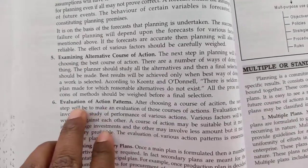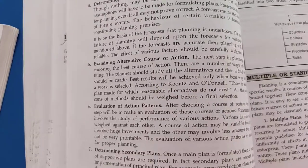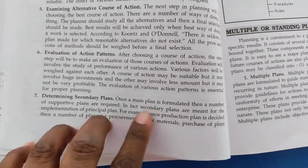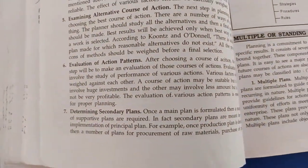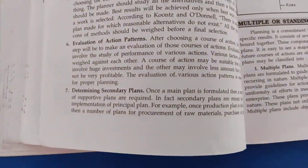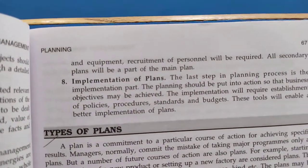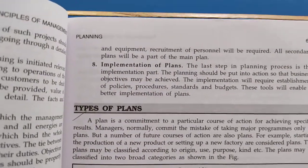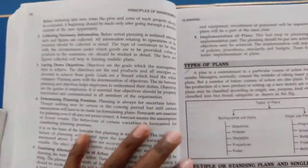In the plan itself, we will make a pattern, and as per that pattern only we have to perform it. Next is determining secondary plans — once a plan is formulated, a number of supportive plans are required. Due to certain conditions or situations, we may need to change certain things, so we should already be ready with a second plan. Finally, implementation of plans: we select one plan and implement it using policies, procedures, standards, and budget. In total, the planning process has eight points.